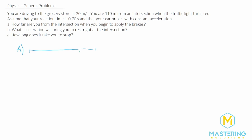If we draw a line here to represent the 110 meters, how far do we go in that 0.7 seconds? Velocity is the change in distance over the change in time, and if we isolate the distance, we multiply both sides by the change in time. That will cancel, and we're left with the change in distance is equal to velocity times time.